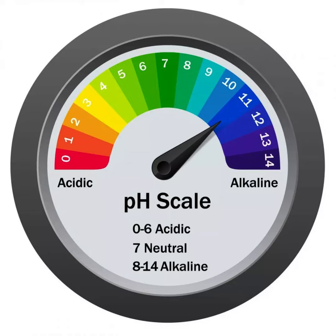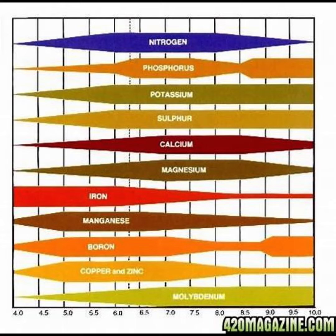Soil pH is a measure of the acidity or alkalinity of soil and is an important factor that influences the health and productivity of plants. The pH scale ranges from 0 to 14, with 7 being neutral. Values below 7 indicate acidic soils, while values above 7 indicate alkaline soils. Here are some reasons why soil pH is important.